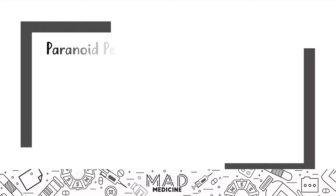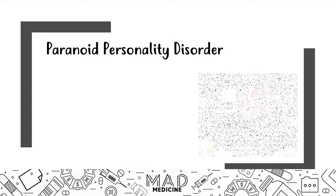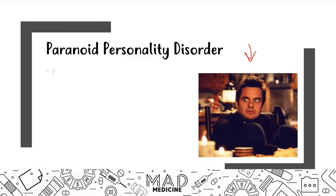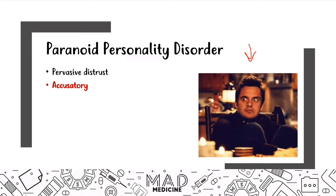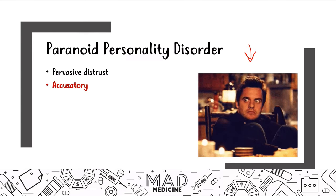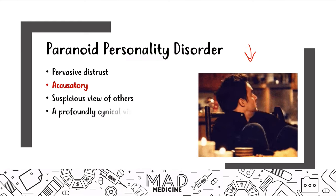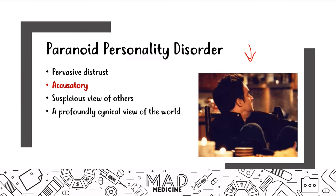Let's talk about paranoid personality disorder. This is a disorder where patients are very paranoid. They have a pervasive distrust — the name pretty much says it all. They're very accusatory; they accuse people of doing bad things, being against them, targeting them, even when that's not the case. They have a very suspicious view of others, which leads to profound distrust and a profoundly cynical view of the world.